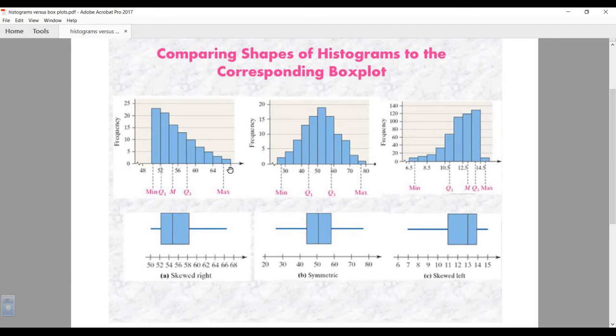When we are skewed to the right, just think of that tail. The direction that the tail goes is the direction you are skewed. On a box plot, we call this the whisker. The whisker is like the tail over here.